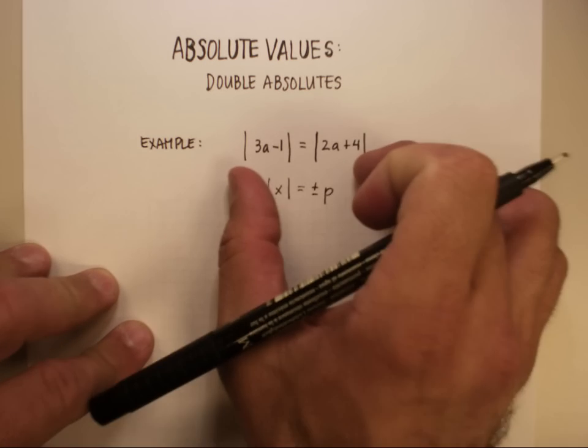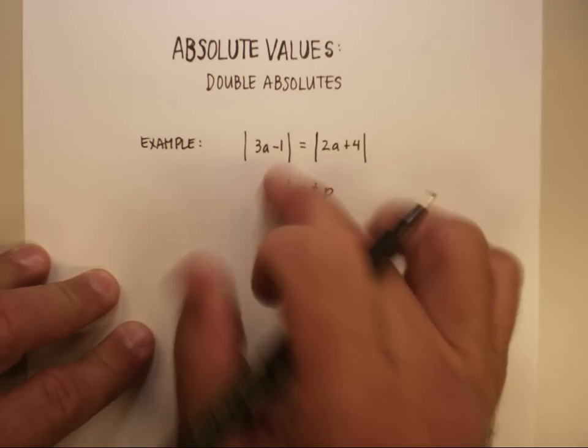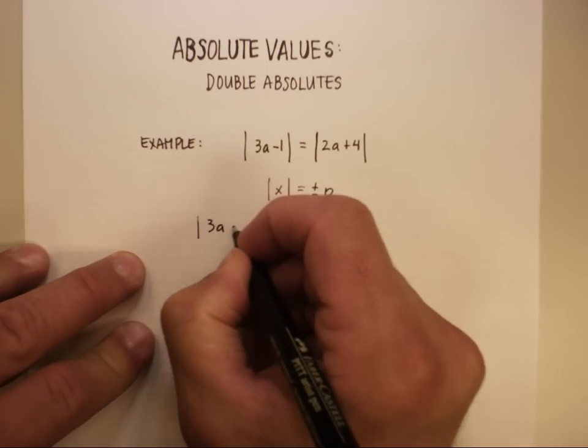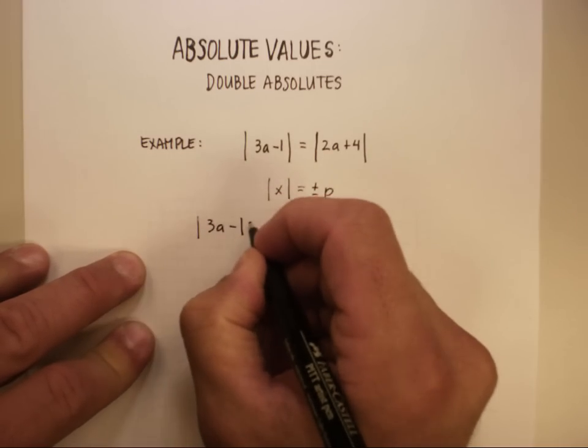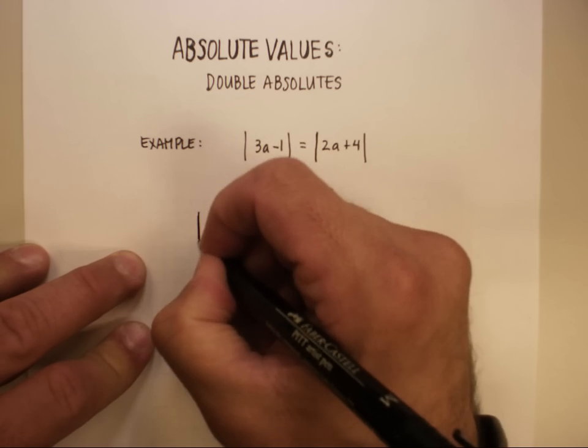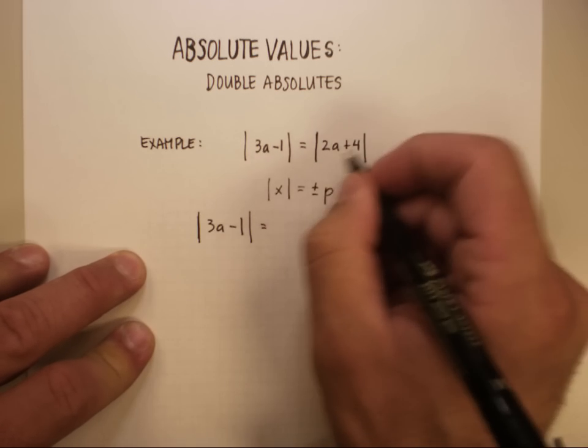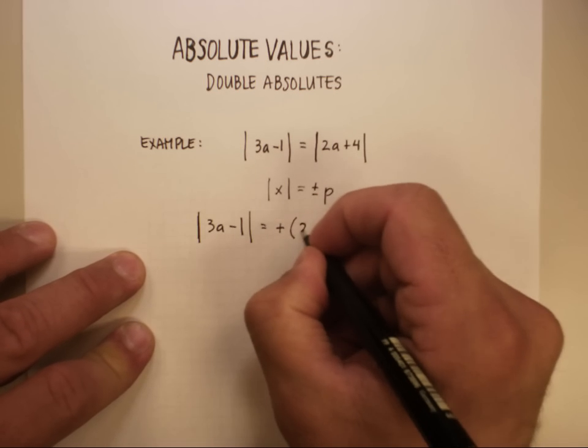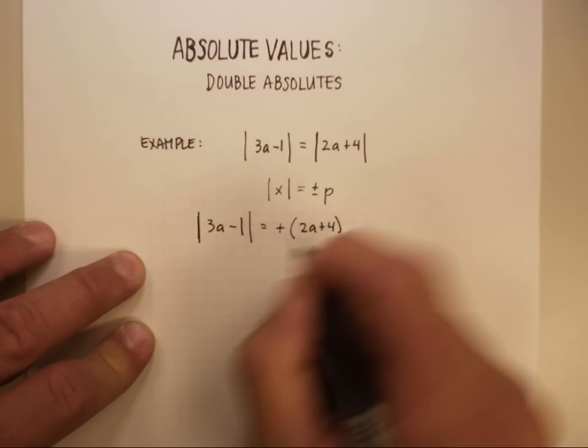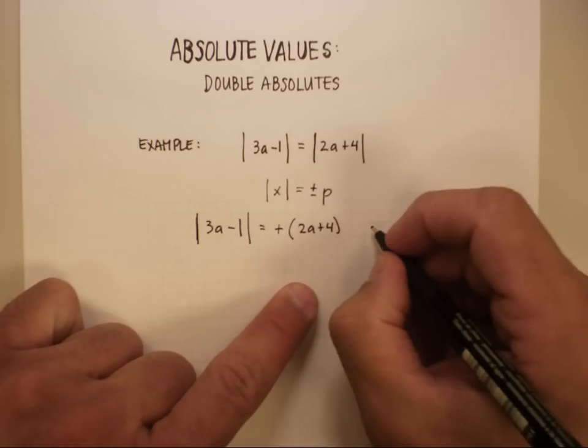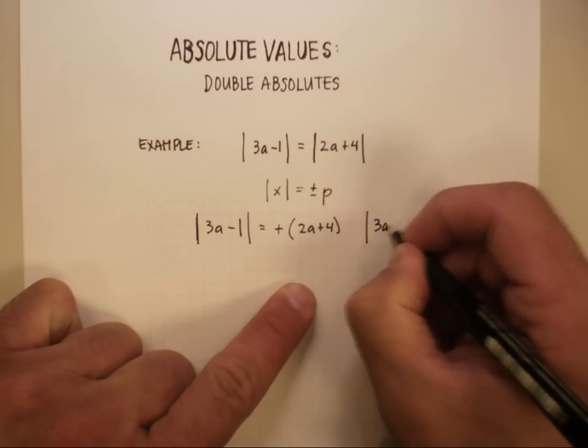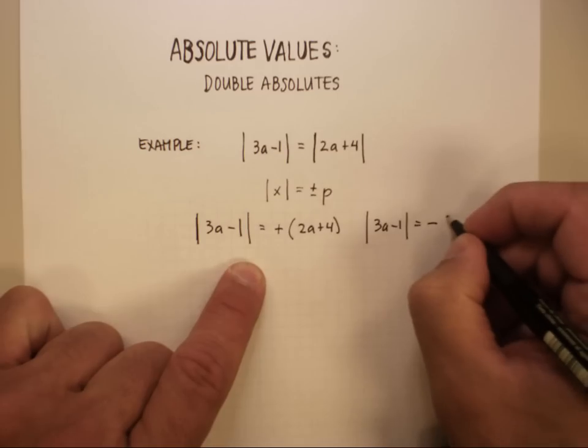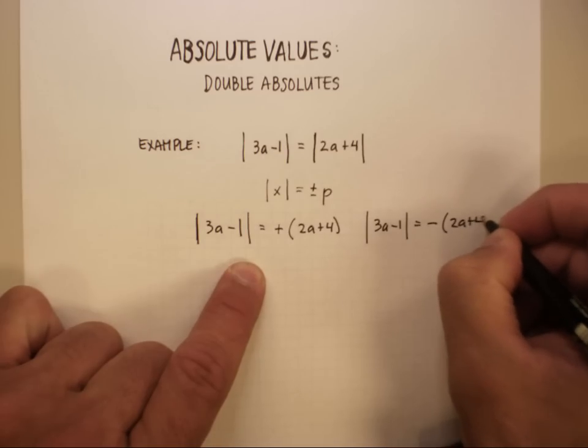So essentially this is what we have here. We have the absolute value of 3a minus 1 is equal to the positive case of this, so we'll say plus the 2a plus 4, which doesn't change this, or it's equal to the absolute value of 3a minus 1 is equal to the negative case of 2a plus 4.